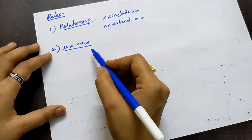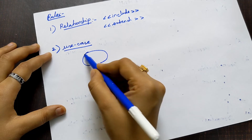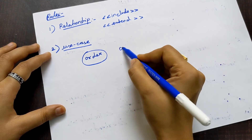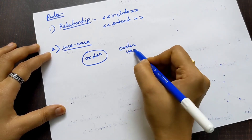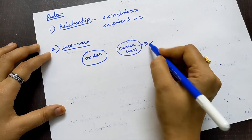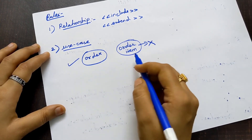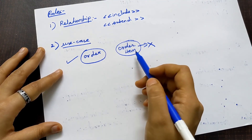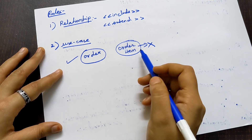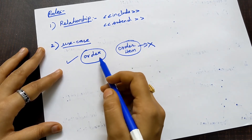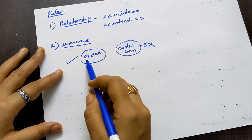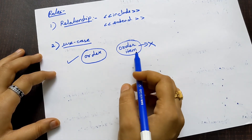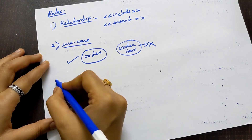For example, in online shopping, writing 'order' inside the ellipse is enough. You do not need to write 'order item' — that is longer and unnecessary. Writing just 'order' is clear and looks simple and nice.